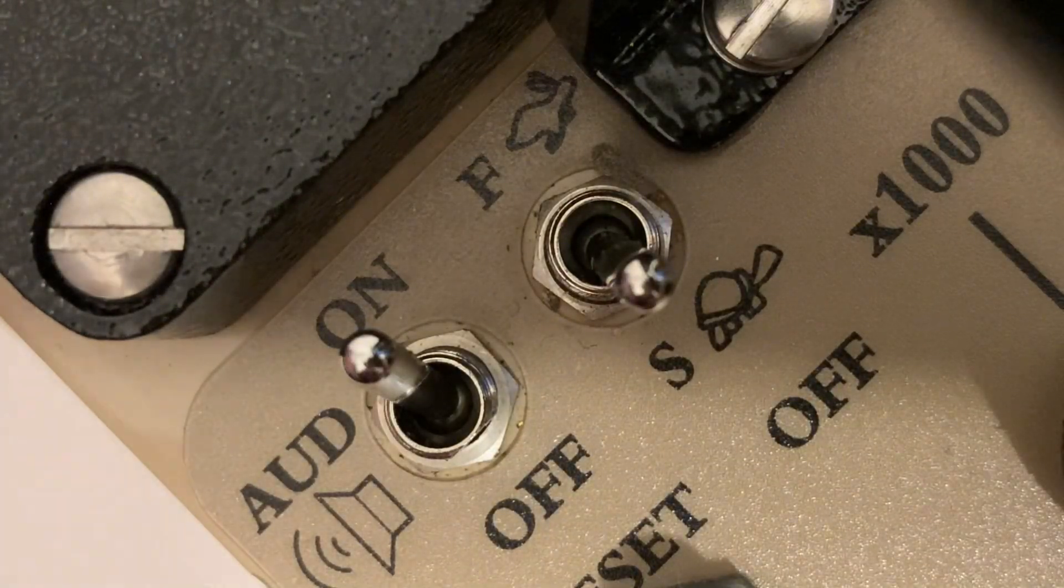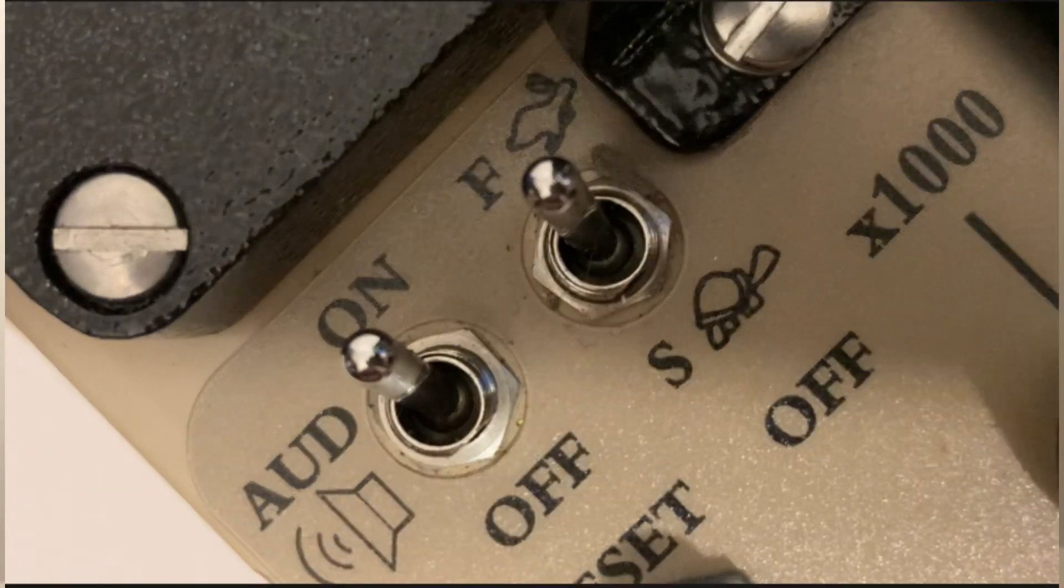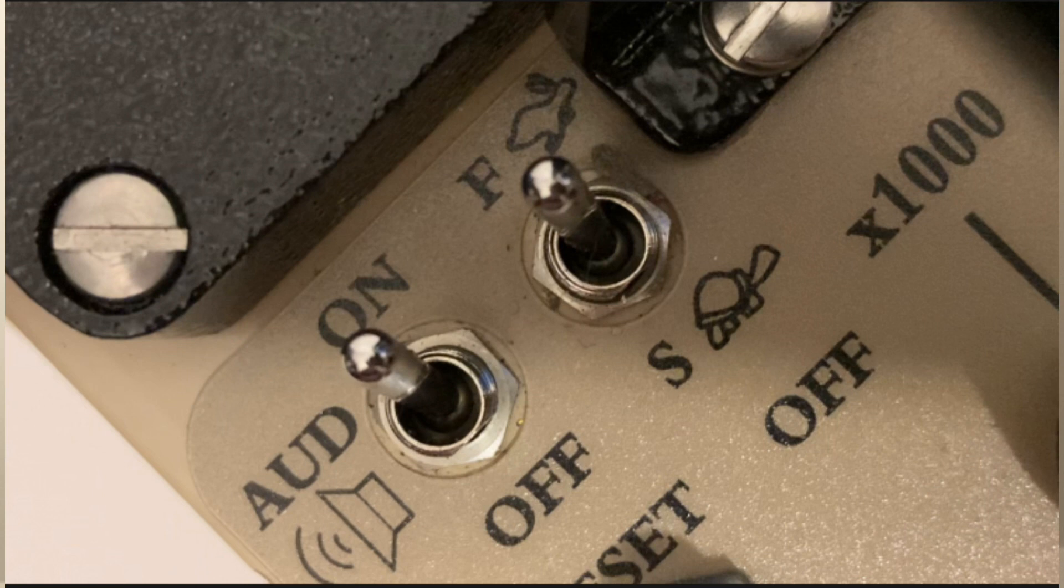Next to this, there is a switch labeled FS. You will see an image of a hare and also a turtle. This is the response time of the unit. In the F position, or fast, the needle will have a time resolution of 4 seconds. In S, or slow, the time resolution will be 22 seconds.